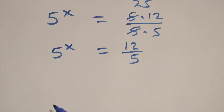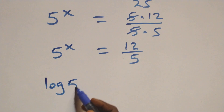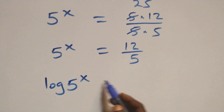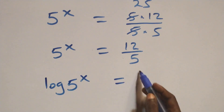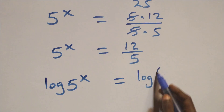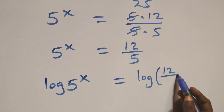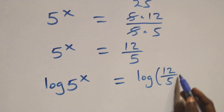We take the log on both sides, giving us log of 5 raised to power x equals log of 12 over 5.